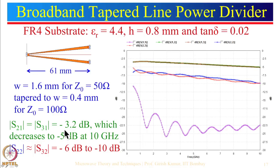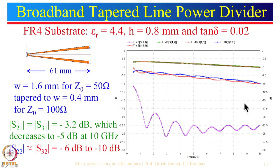For this tapered design, S21 = S31 = minus 3.2 dB, shown over a frequency range of 0 to 10 GHz — a very large frequency range. S22 = S32 because there is no isolation resistance, equal to minus 6 dB at low frequency, decreasing to about minus 10 dB. The decrease is because we used lossy FR4 substrate with very high tan delta — one should not use FR4 beyond 2.5 GHz. With a good-quality substrate this decrease would be relatively smaller.